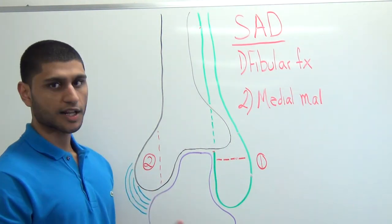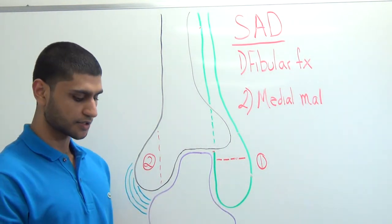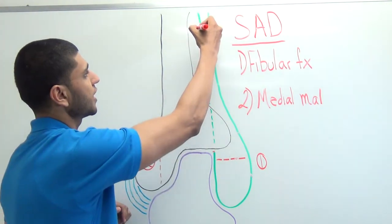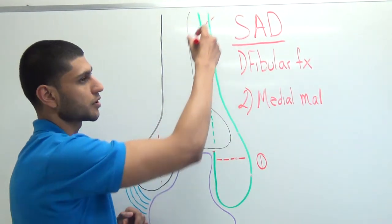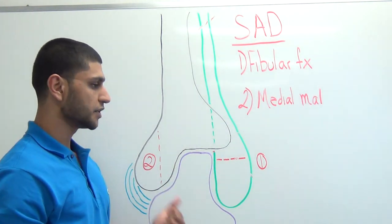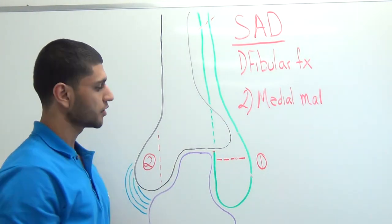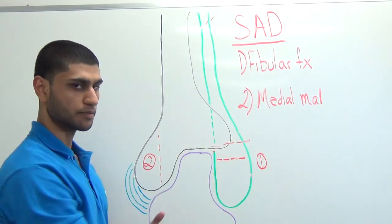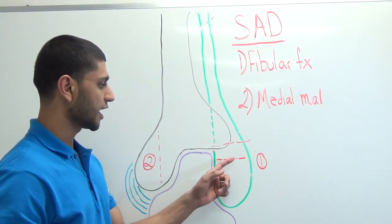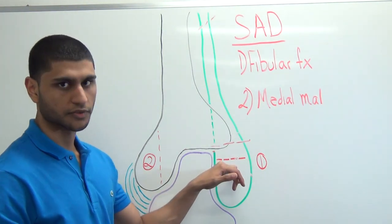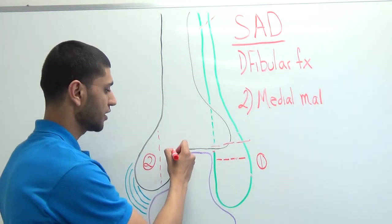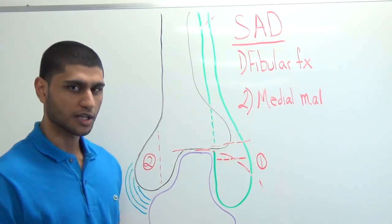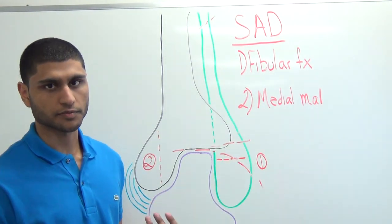A mnemonic for remembering SAD: in PER we see a high fibular fracture — Danis-Weber C; in PAB and SER we see a fracture at the level of the ankle joint — Danis-Weber B; but in SAD it's below the level of the ankle joint. Think of it as someone frowning because he's SAD. It's a silly mnemonic, but it helps remember the relationship.